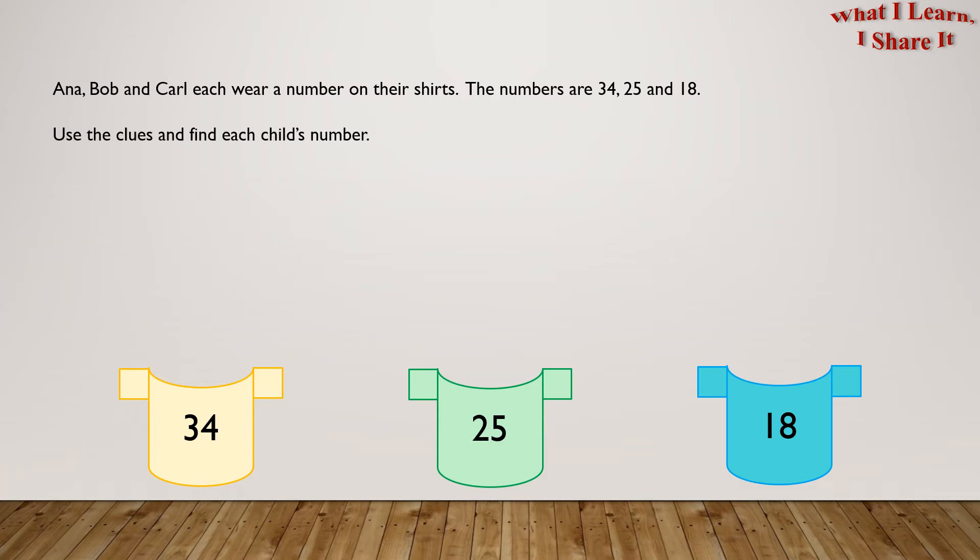Use the clues and find each child's number. The clues are the boys wear even numbers on their shirts. The sum of the digits in Bob's number is 7.